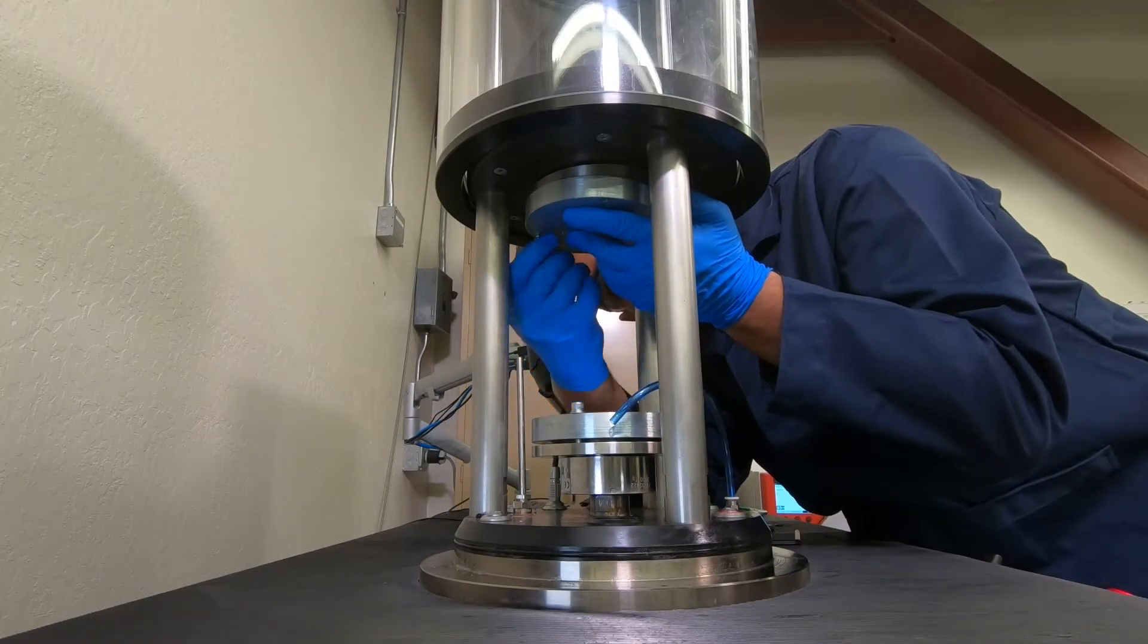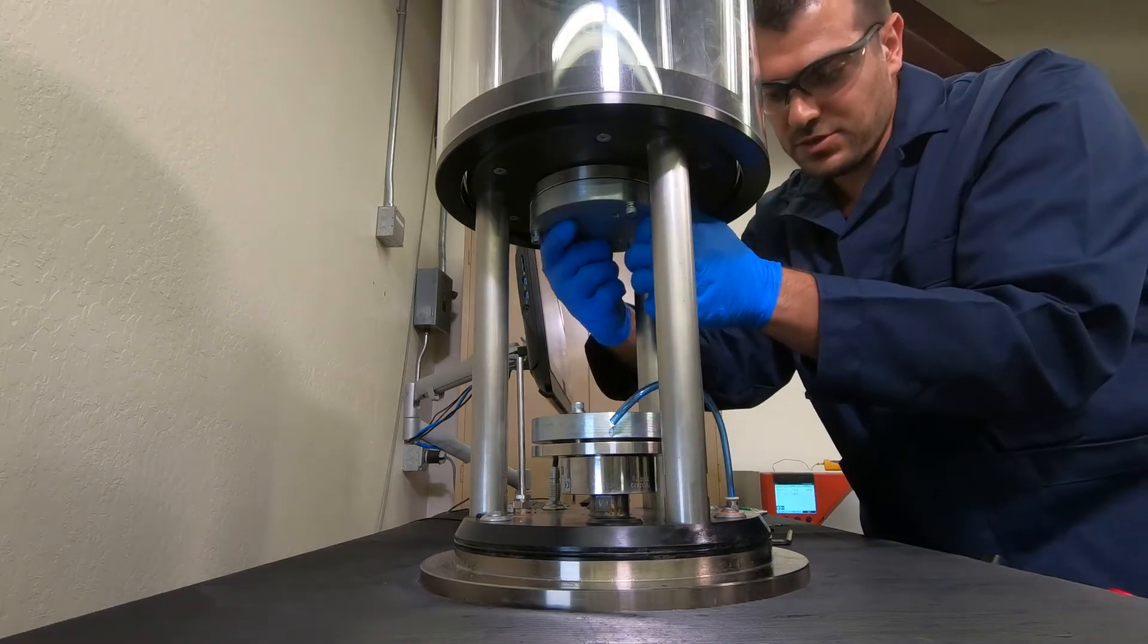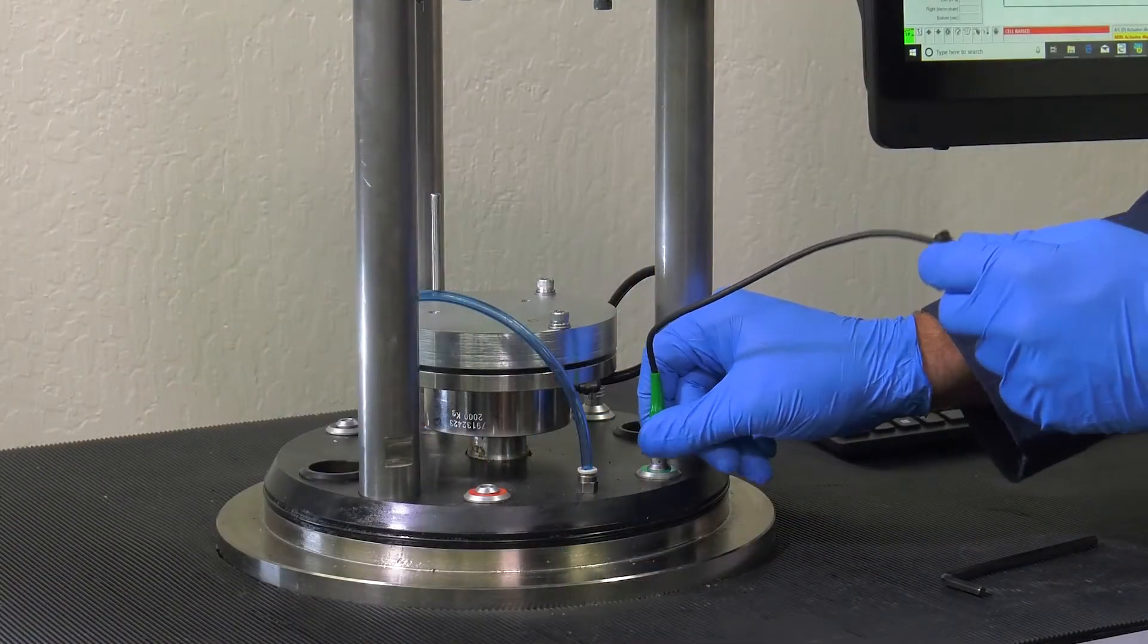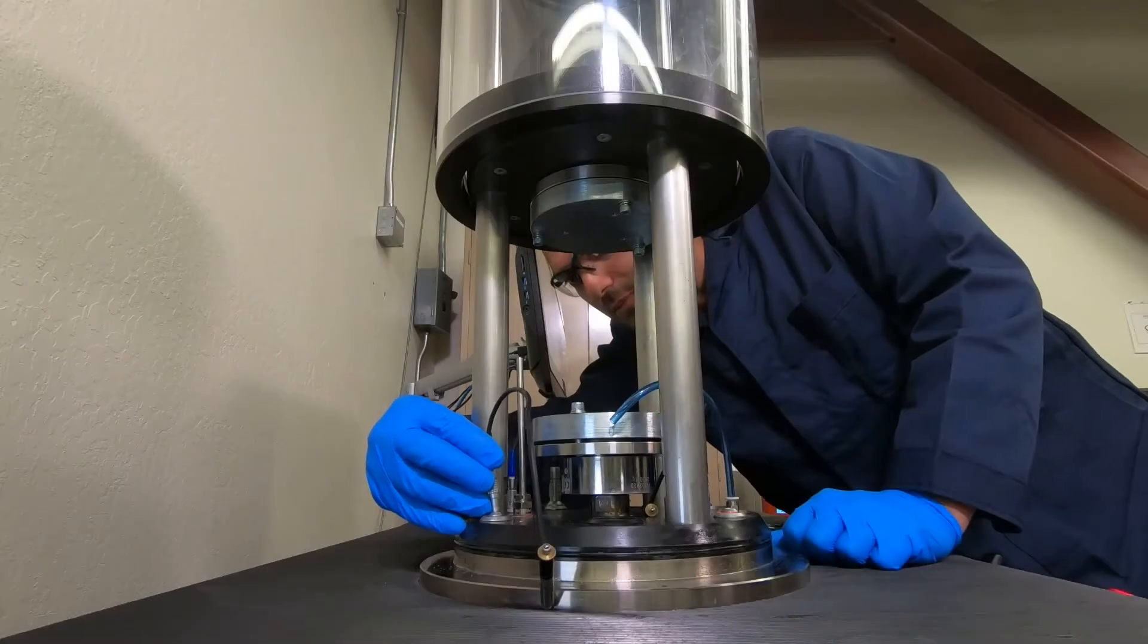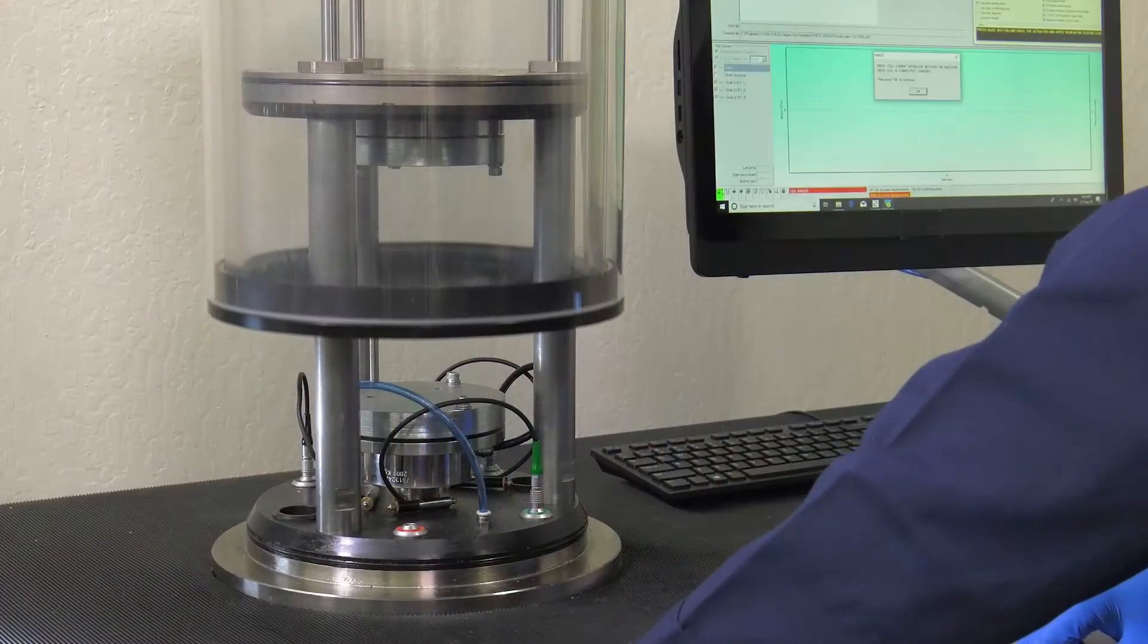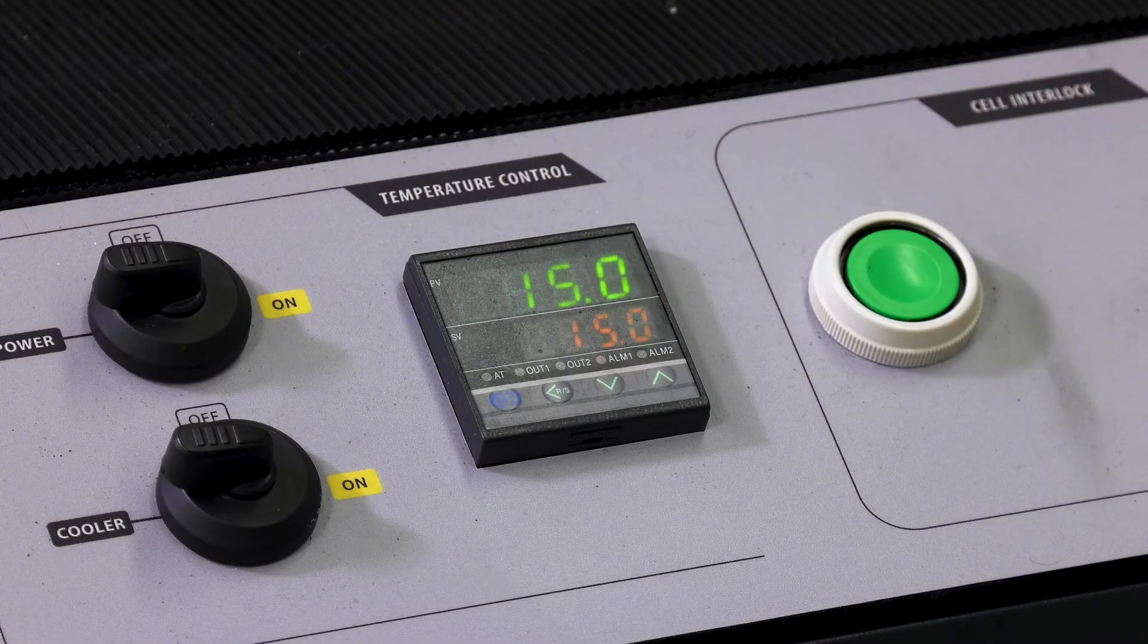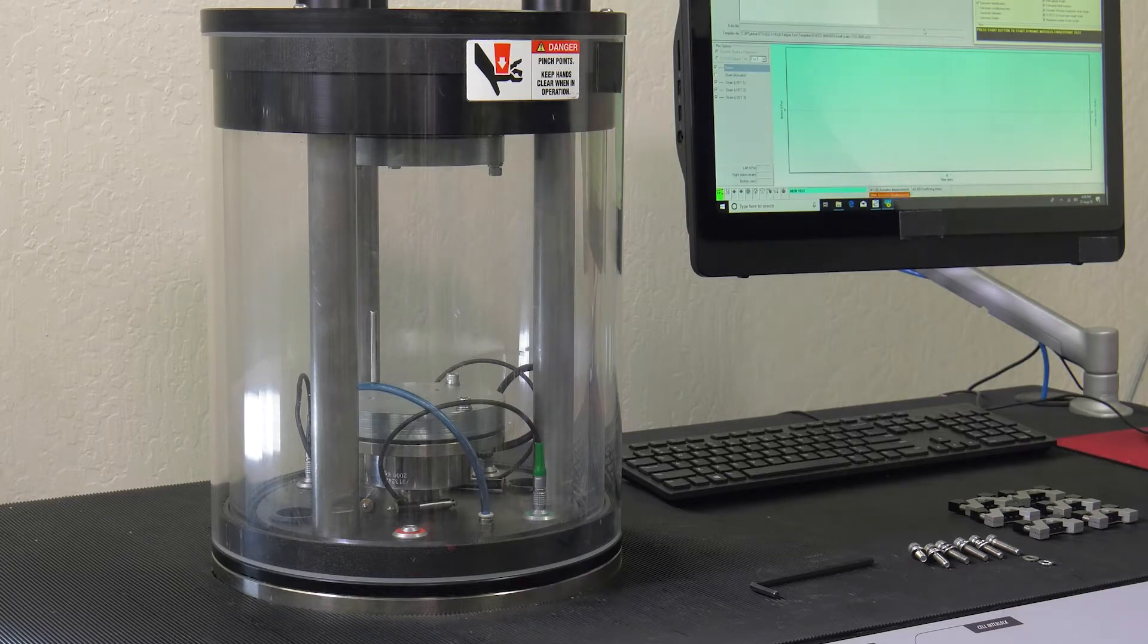Next, use screws and washers to install the upper platen. Be careful not to over tighten this platen so it can rotate during the assembly. Install the LVDT sensors on the equipment. Close the AMPT conditioning chamber and set the temperature control to the desired testing temperature. Allow the AMPT conditioning chamber to stabilize at the set temperature.